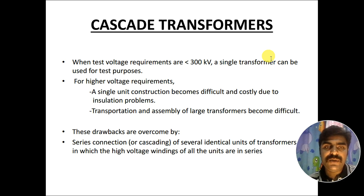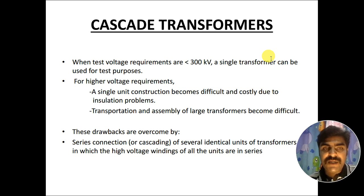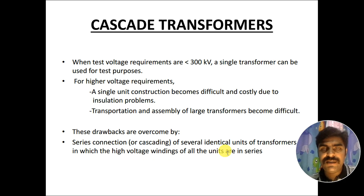These drawbacks can be overcome by series connection, another name for which is cascading. In this arrangement, several identical transformers are connected in series — meaning the high voltage windings of all units are connected in series.